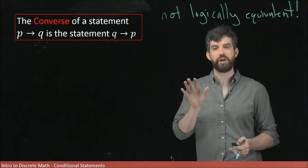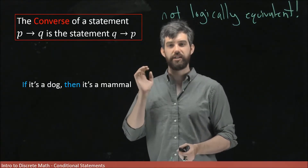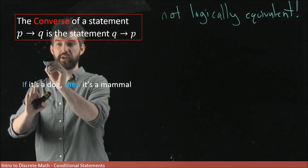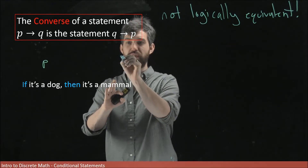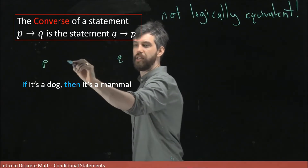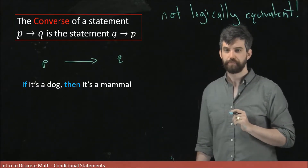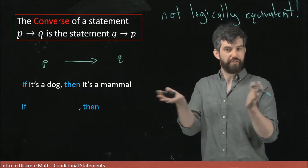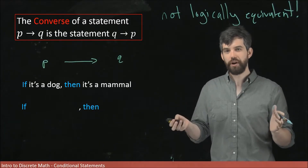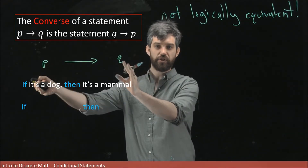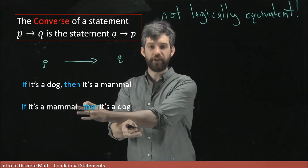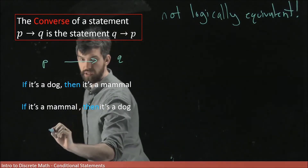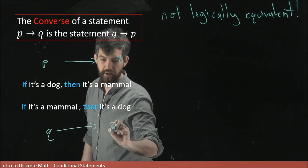Let's see how this works in the context of a specific example. Take the conditional: if it's a dog, then it's a mammal. Here P is 'it's a dog' and Q is 'it's a mammal,' giving us P implies Q. If I take the converse, we keep the if-then structure but reverse the parts — so the converse is: if it's a mammal, then it's a dog. This is the statement Q implies P.